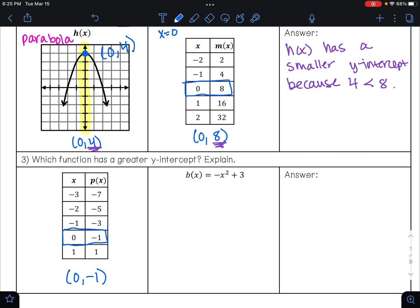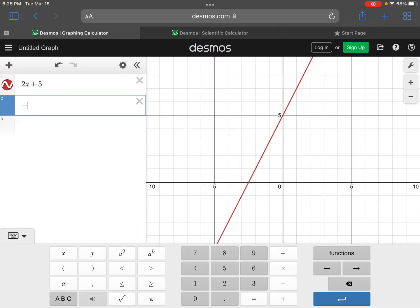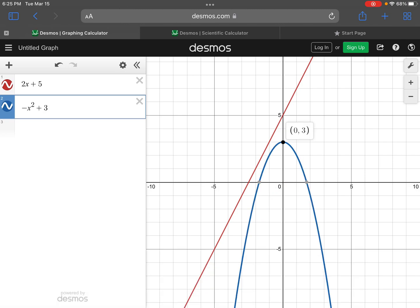For b(x), we have b(x) equals negative x squared plus 3. This is a quadratic equation. I know that this is quadratic because my highest exponent is 2. So what I'm going to do is I am going to go ahead and type this equation into Desmos. So I'm going to have negative x squared plus 3. And that y-intercept is right here at the point (0, 3).